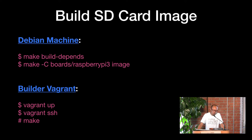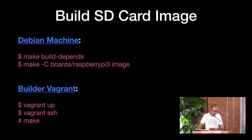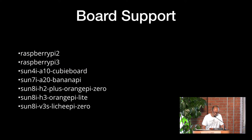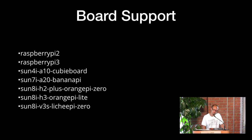Next, the software. We want something we can easily re-image and build in a very easy way. On a Debian machine it takes two lines to compile the whole thing and you end up with an image that gets flashed directly onto the SD card. If you don't have a Debian machine, we have a Vagrant builder environment where you make three calls. We originally set out to only run this on the Orange Pi, but that list grows as needs come up.